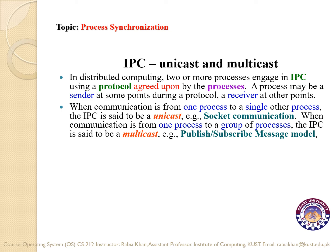If the communication is between two independent processes, it is known as unicast, also called point-to-point communication, the way we do in socket communication. If the communication is from one process to a group of other processes, this is known as multicast, the way YouTube works on the publish-subscribe model. What you publish on your YouTube page will be notified to all your subscribers — similar to sending a message to all, or using CC and BCC in your emails.